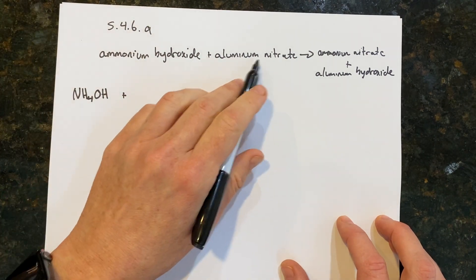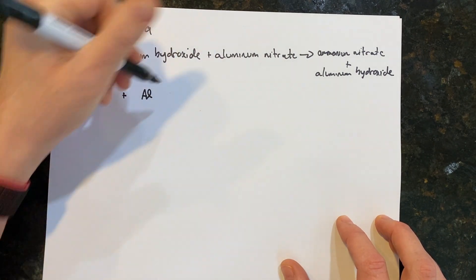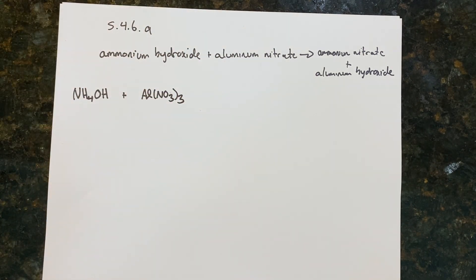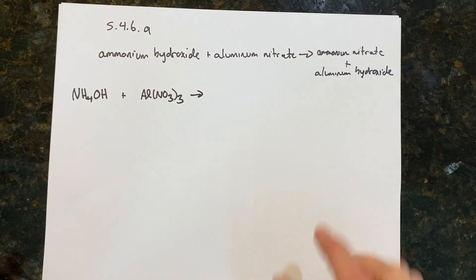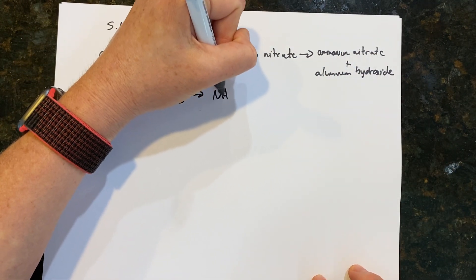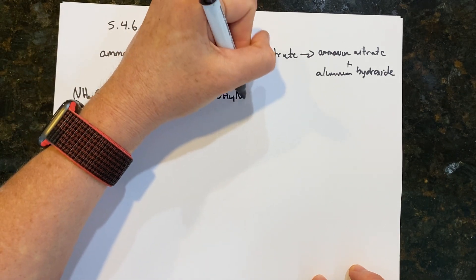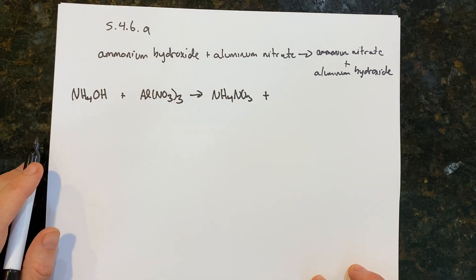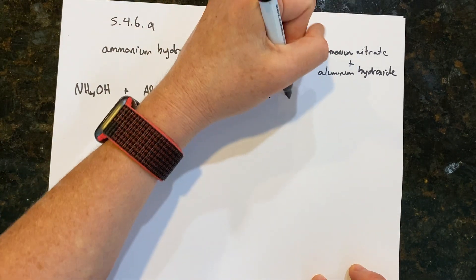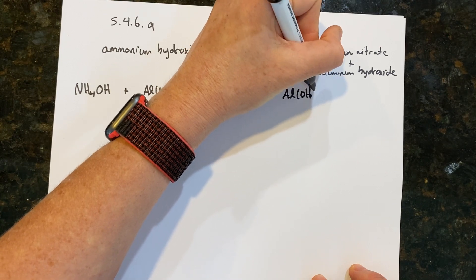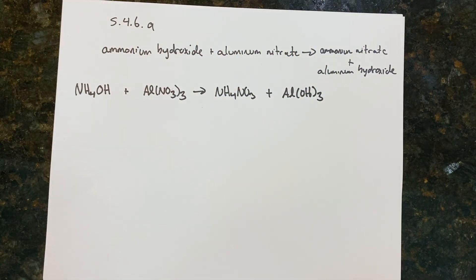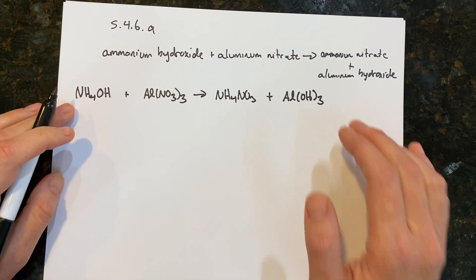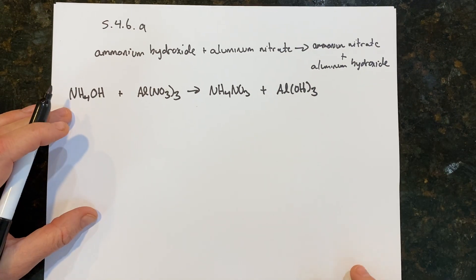We're reacting it with aluminum nitrate. Aluminum has a 3+ charge; nitrate has a negative one charge, so we have to have three of them. We're forming ammonium nitrate — NH4⁺ plus NO3⁻ — and aluminum hydroxide, Al(OH)₃. If you weren't able to do that, you need to go back to Chapter 4 and make sure you understand nomenclature.